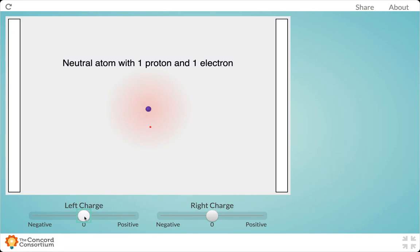What would happen if we made that plate on the left negatively charged? Notice what's happening to the electron cloud as we max it out. What you should be noticing is that the electron cloud has now shifted away from that charged plate.